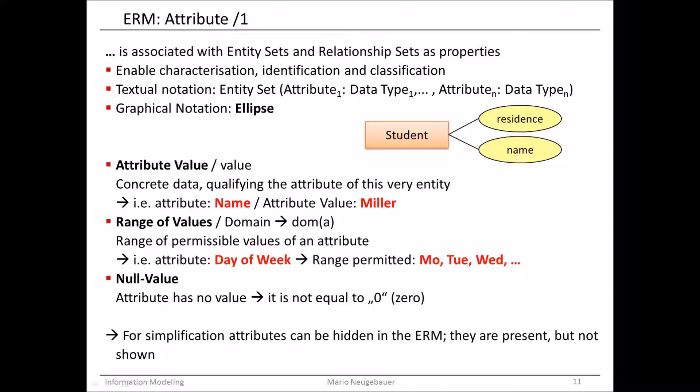I will talk about the data types later. In the textual notation, you write down all the attributes in a list, and therewith you know, if you read the text, that the entity set with a certain name has certain attributes.